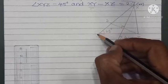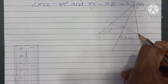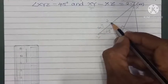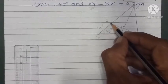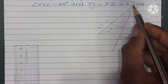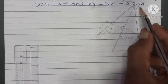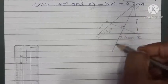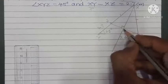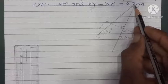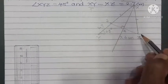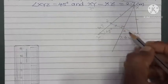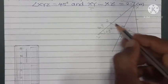XY minus XZ, the difference, is 2.7. Point P is placed such that the distance from Y is 2.7. XQ is the perpendicular bisector of PZ — every point on the perpendicular bisector is equidistant from the endpoints, meaning PX equals XZ, and PQ equals QZ because Q is the midpoint of PZ.